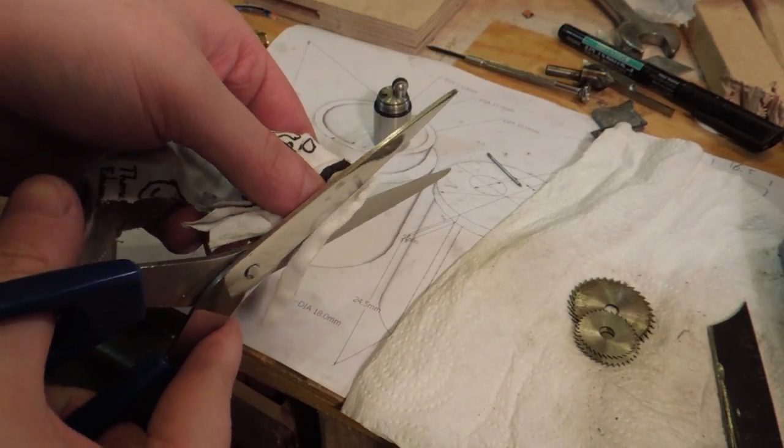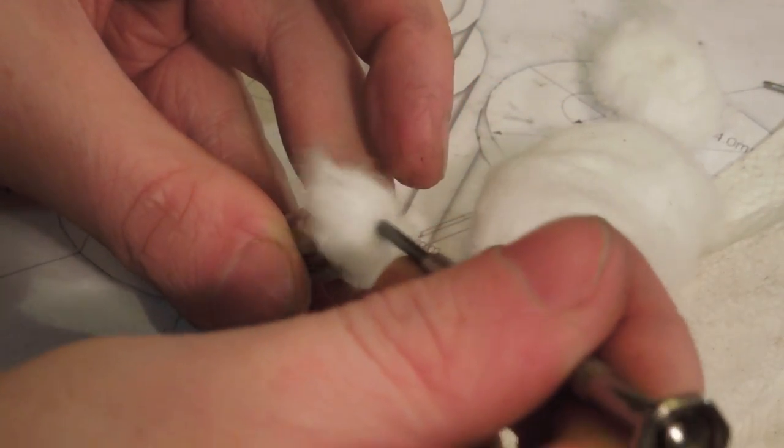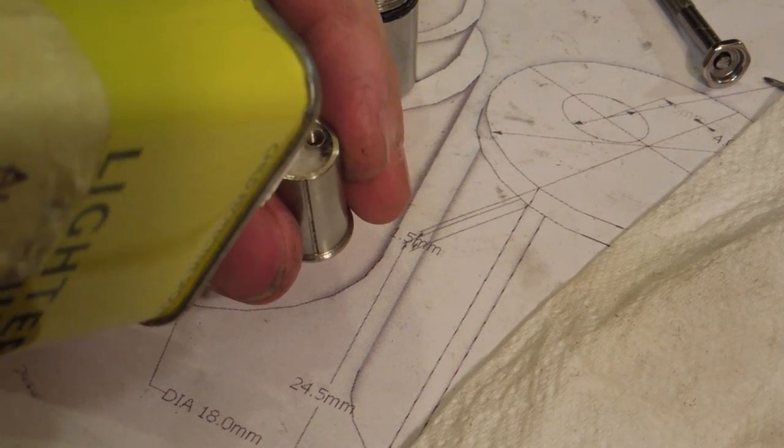The wick was cut from an old cotton tea towel and was shoved into the hole with the aid of a small nail. Cotton wool was then used for the wadding. Then the lighter was fueled up and reassembled.